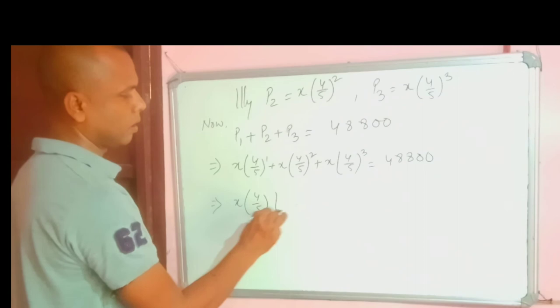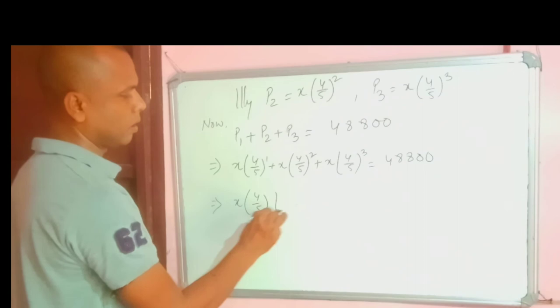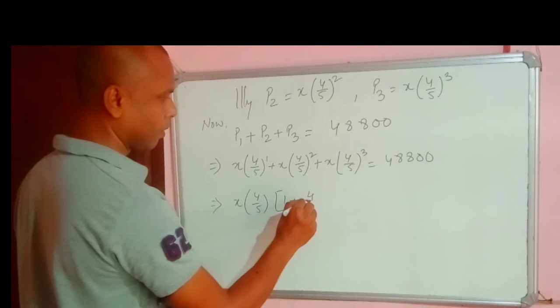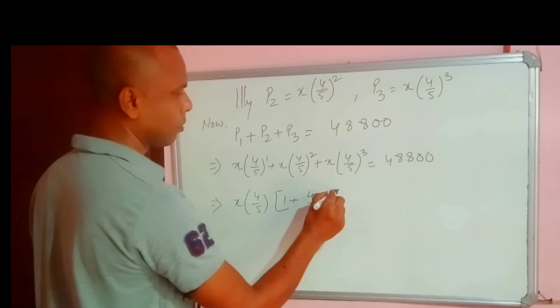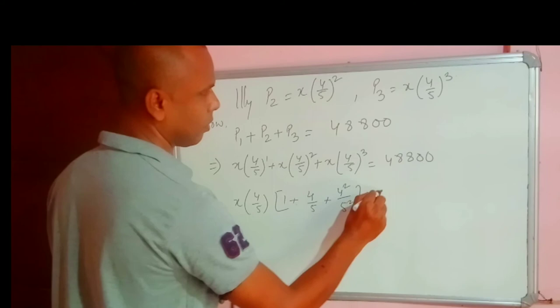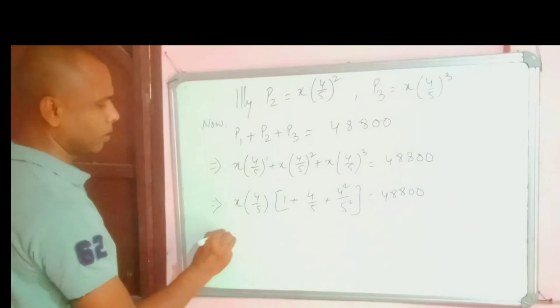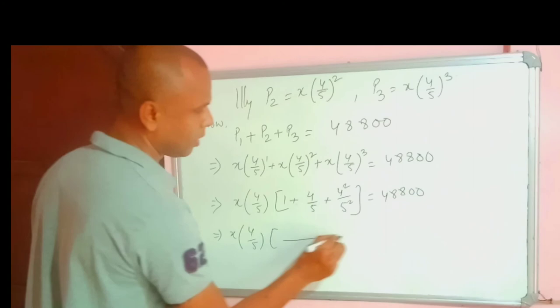X 4 by 5. So within the bracket we are having here 1 plus 4 by 5 plus, since out of 3, one will go out. So we are having here 4 square by 5 square. It is equal to 48,800. So X will retain the same. Let us take the LCM. It is 25.